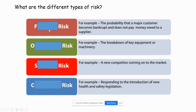The first one is financial risk. For example, the probability that a major customer becomes bankrupt and does not pay. It's basically everything to do with money — if you have a shortfall of money, if you don't have enough money for something, if you didn't earn enough profit, if you can't pay people, all these sorts of things are financial risks.